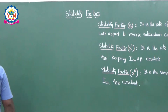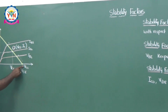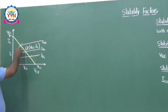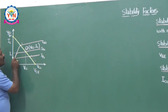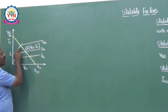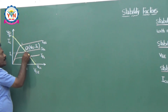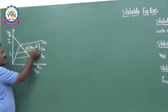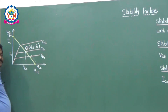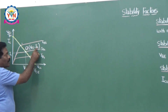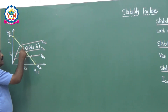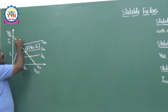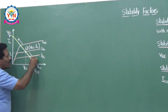Once again, consider the common emitter output characteristics with VCE and IC. The load line connects the two points VCC/RC and VCC, intersecting the common emitter output characteristics at different places. We already concluded that the best location of the operating point is at the centre of the load line. However, since Q has coordinates of VCE and IC, the collector current IC is a function of temperature — whenever temperature variation occurs, Q also changes, moving either toward the saturation region or toward the cutoff region.